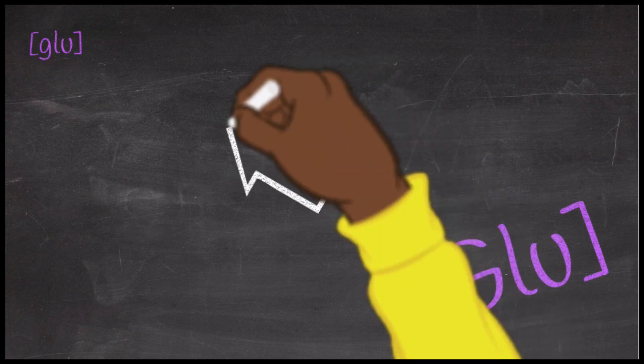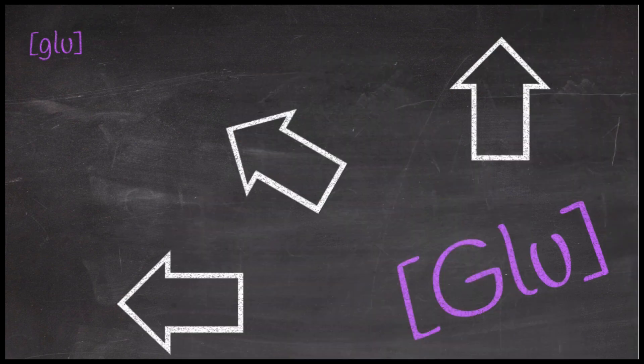This applies to molecules as well. If we look at glucose right here, there is a high concentration of glucose in one region and a lower concentration of glucose in another region. Glucose will diffuse from an area of high concentration to an area of low concentration passively, down its chemical gradient, down its concentration gradient.